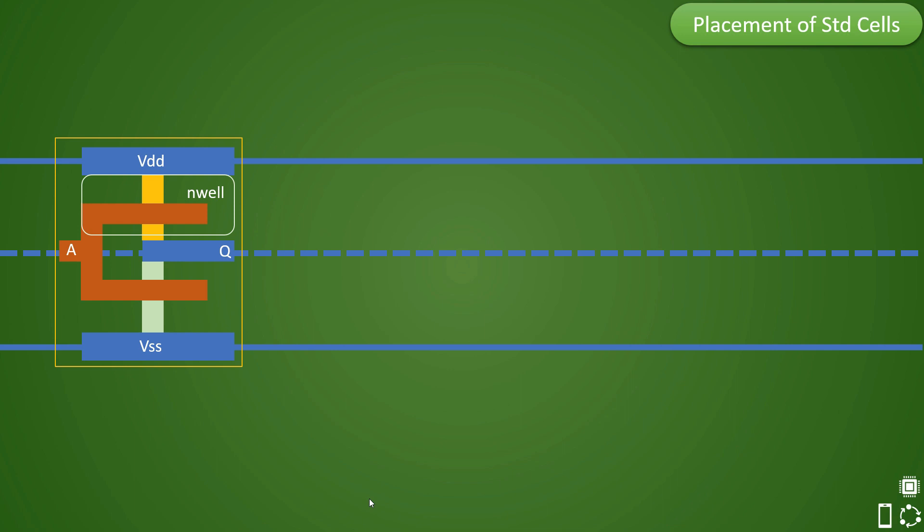Hence, in this case, router can easily access the pin and create the routing properly. So let's say if you want to create a routing for Q pin in M2 layer, you can use this track directly and there is no obstruction here.